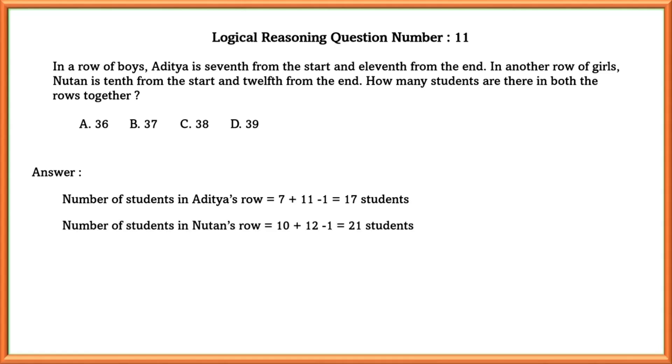Similarly, the number of students in Nutan's row is 21 students. So the total number of students in both rows together is 38.